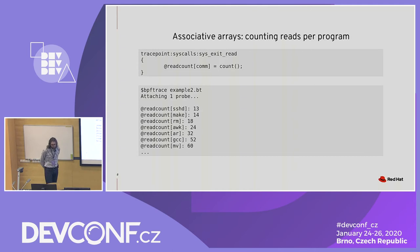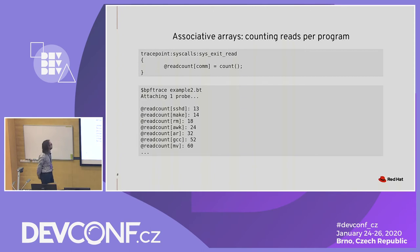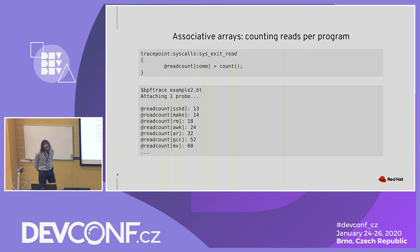Now it's the same example, but I've added a key just after the variable. I use the command name as the key. So now we have an example with an associative array. If you look at the output, now it's sorted by key — in this case, the command name.